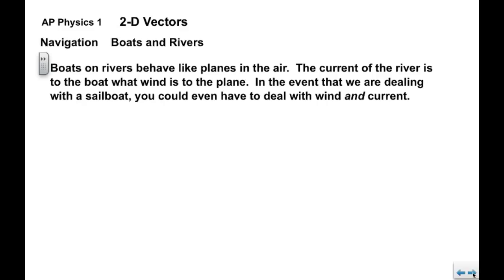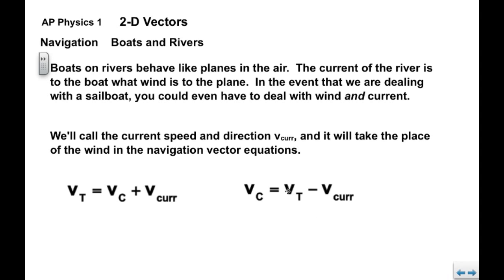Now we're going to move to boats and rivers. A boat on a river behaves like a plane in the air. The current of the river is to the boat what wind is to the plane, so it tends to push the boat in the direction of the current. There's a possibility that you could be dealing with a sailboat, in which case you might have to deal with wind and current. We're going to call the speed and direction of the current V sub cur or V sub C-U-R-R. It takes the place of the wind in the navigation vector equation, so they behave the same way. Track equals course plus current, or course equals track minus current.